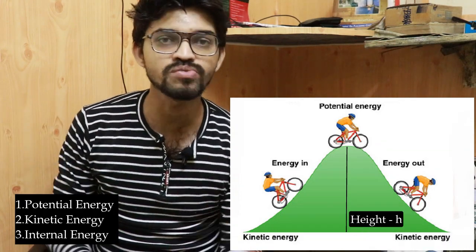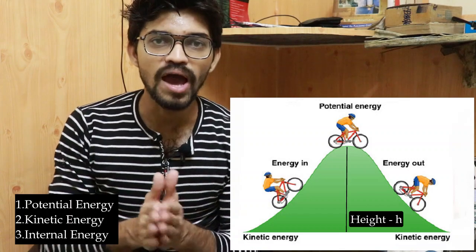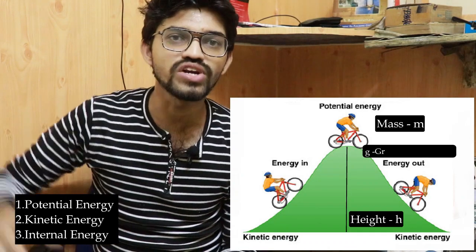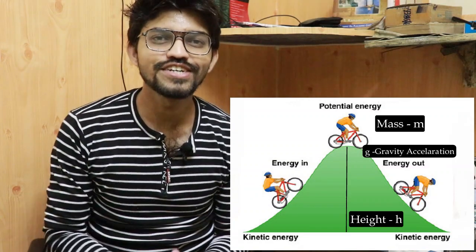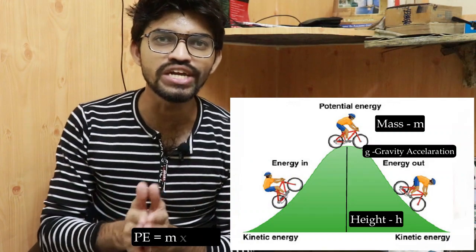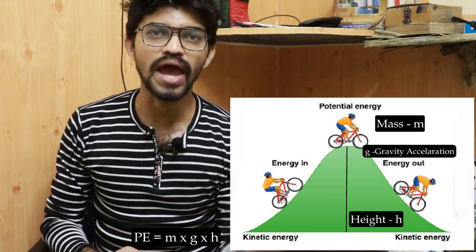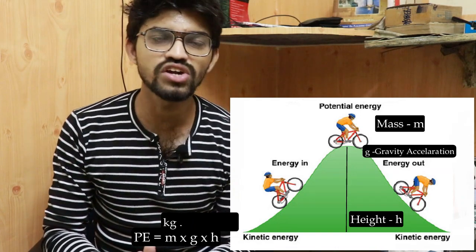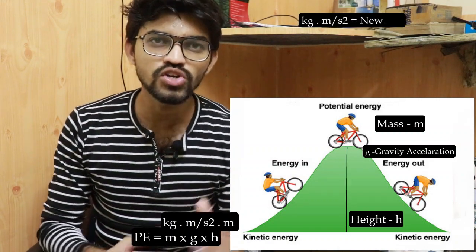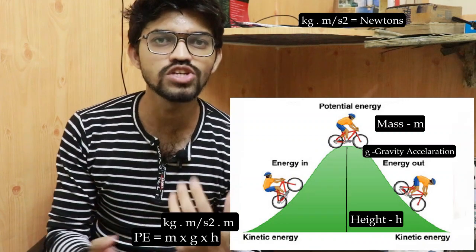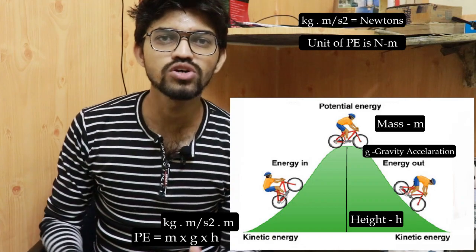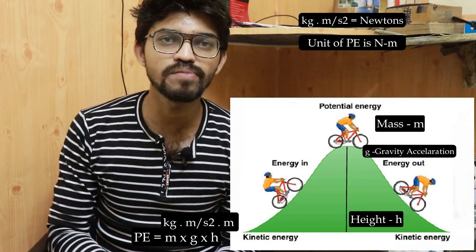Here, h is the height in meters and m is the mass of the body in kilograms. The acceleration due to gravity, when the body falls, causes the body to gain velocity. We consider that acceleration in meters per second squared. The net formula for potential energy is: PE = m × g × h, where mass is in kg, g is acceleration due to gravity in m/s², and h is height in meters. Since kg × m/s² equals newtons, the unit of potential energy is newton-meter.